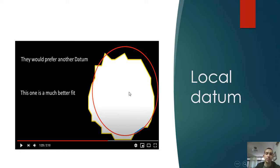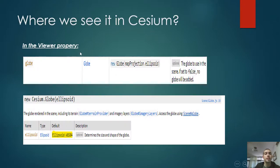So where do we see it in Cesium? In the viewer property, we have a property called globe, which means the globe to use in the scene. In the globe class, it has a property called ellipsoid, and the default is ellipsoid WGS84.